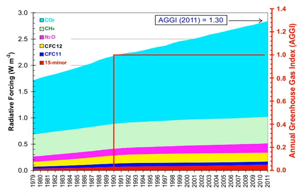Aside from purely human-produced synthetic halocarbons, most greenhouse gases have both natural and human-caused sources. During the pre-industrial Holocene, concentrations of existing gases were roughly constant because the large natural sources and sinks roughly balanced. In the industrial era, human activities have added greenhouse gases to the atmosphere, mainly through the burning of fossil fuels and clearing of forests.